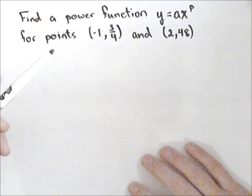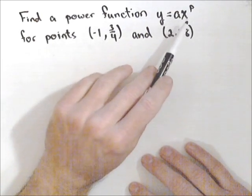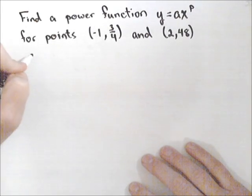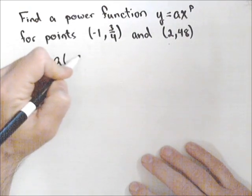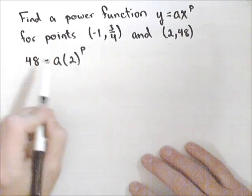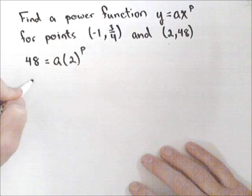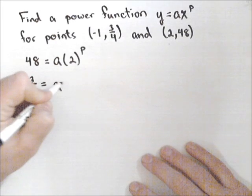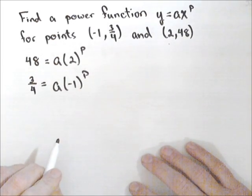The way we're going to start this is very similar to how we'd find an exponential through two points. We're going to plug those points in for x and y and make two equations. For this point, when y is 48, x must be 2 to the p. So 48 = a(2)^p. I'll do the same thing for the other point: 3/4 = a(-1)^p.